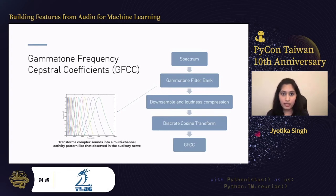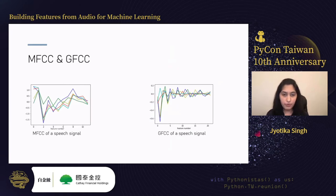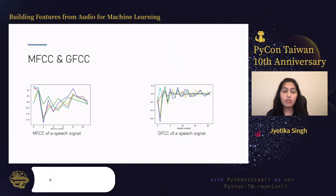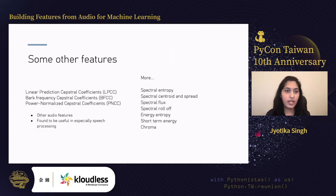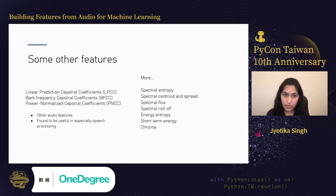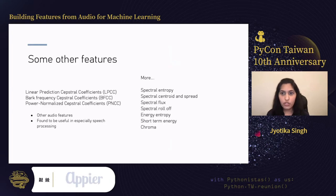GFCC does really well in speech recognition and speaker identification tasks. Here is a visual comparison of MFCC and GFCC side by side for the same speech signal — these features actually look different, so one is not simply a derivative of the other. Both individually can perform well with machine learning models, and combining them sometimes does an even better job. There are many other features I won't cover in detail, but they are listed on this slide, including features from the time domain, spectrum, and chroma features representing the tonal content of musical audio.